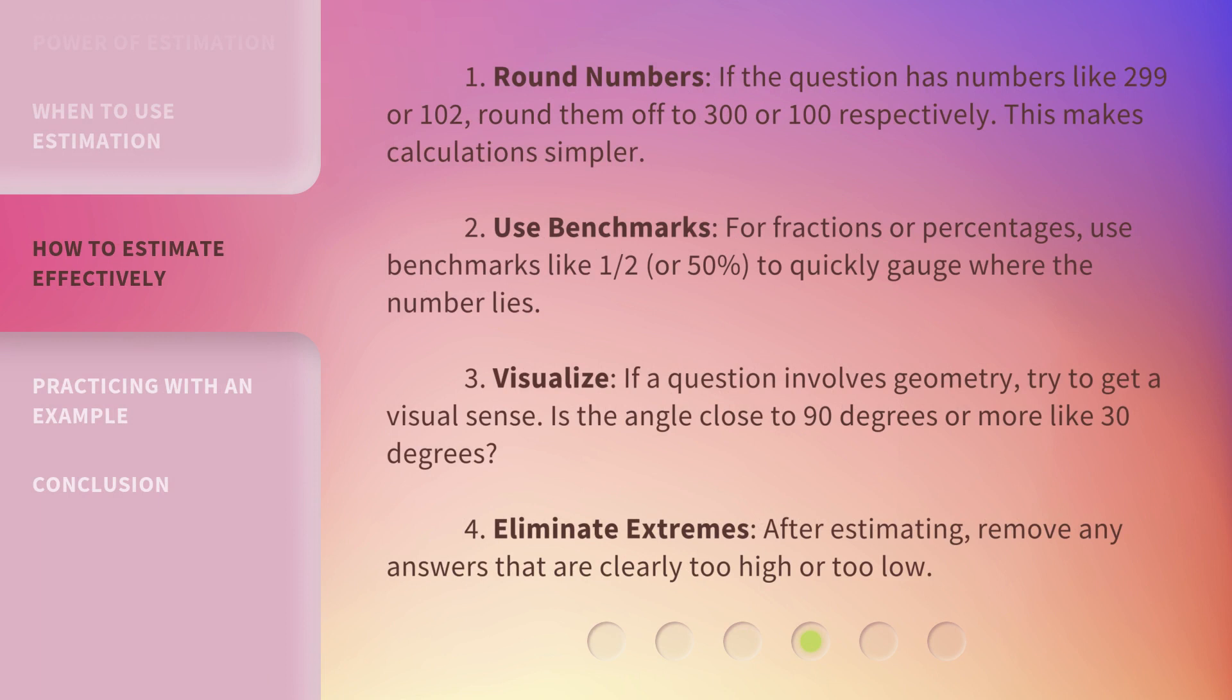1. Round numbers. If the question has numbers like 299 or 102, round them off to 300 or 100 respectively. This makes calculations simpler. 2. Use benchmarks. For fractions or percentages, use benchmarks like 1 half or 50 percent to quickly gauge where the number lies. 3. Visualize.